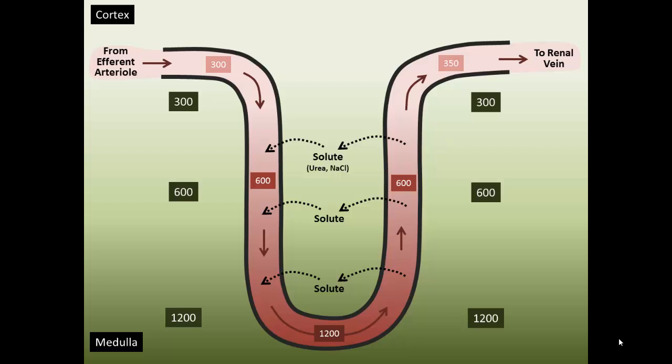Juxtamedullary nephrons are specialized in creating a hyperosmotic interstitial fluid, particularly during the state of antidiuresis, where we're going to use this very hyperosmotic ISF to draw as much water out of the nephron as possible, particularly in the medullary collecting ducts.